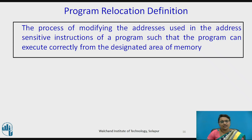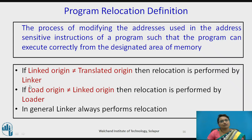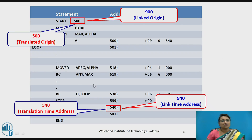Wherever the program is loaded in memory, it must execute correctly without affecting any instructions. Therefore, we call this program relocation. If the linked origin is not equal to the translated origin, relocation is performed by the linker. If the load origin is not equal to the linked origin, relocation is performed by the loader. In general, linkers always perform relocation. Sometimes loaders do not — those are called absolute loaders, where relocation does not happen at the loading stage.